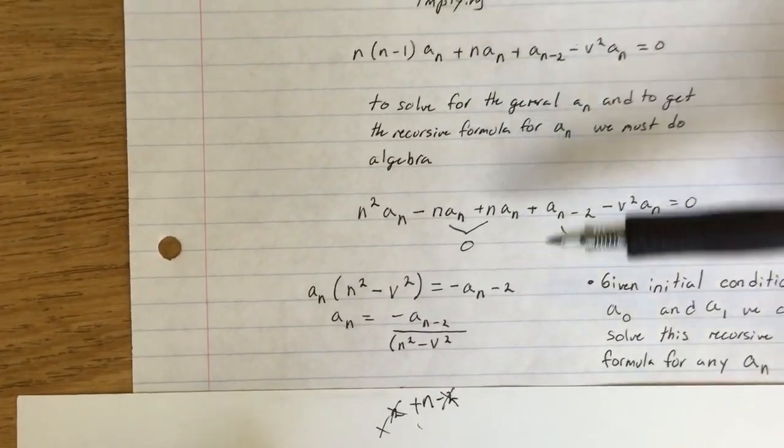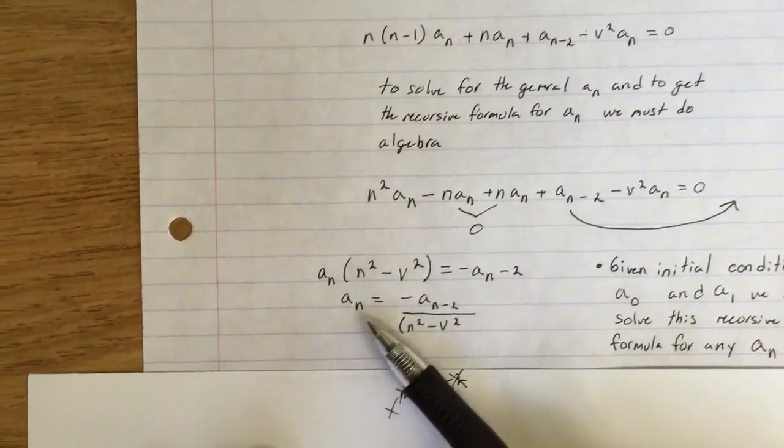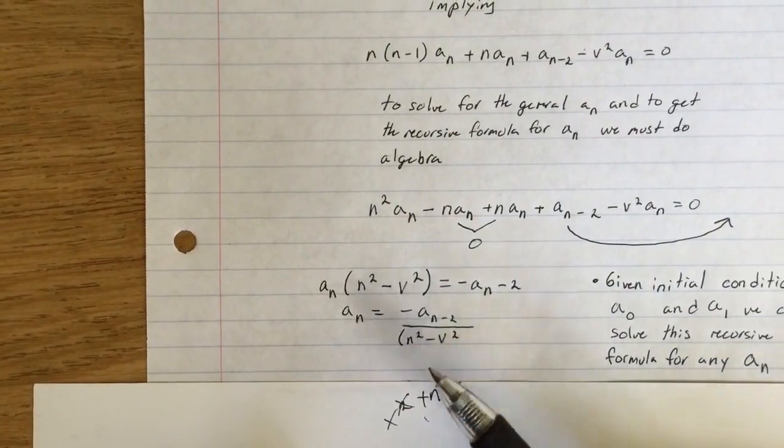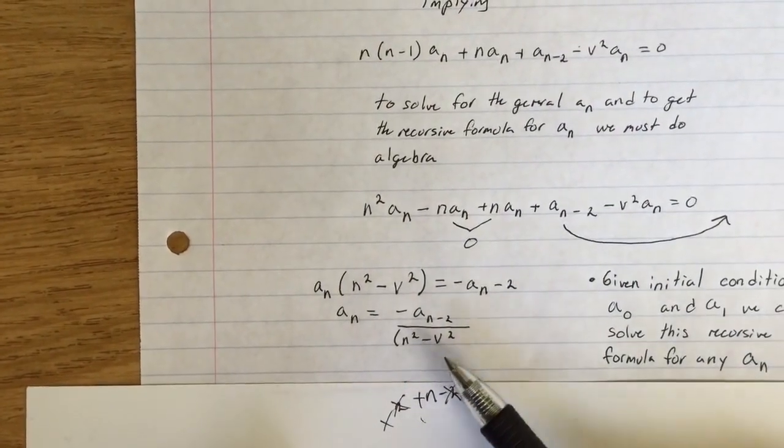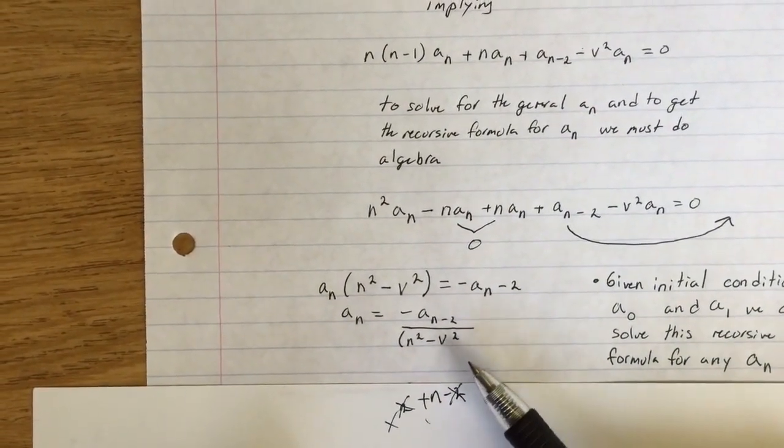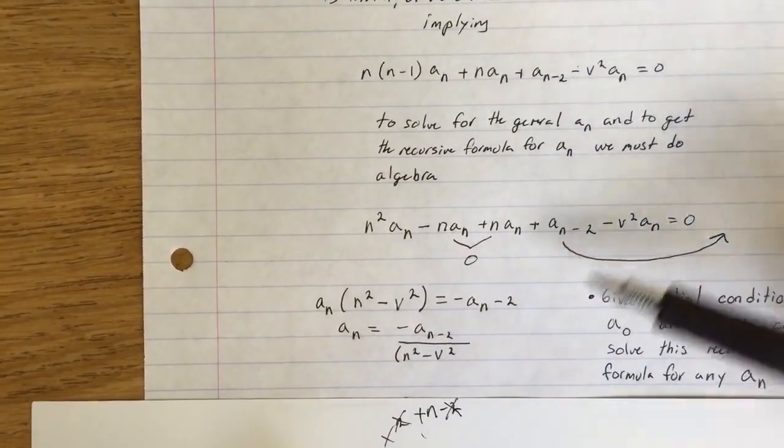Basically doing this, it lets you find a general a_n, not as a basis, but found from other values of a_(n-1), a_(n-2), and so forth.